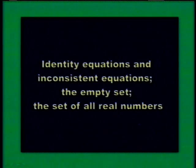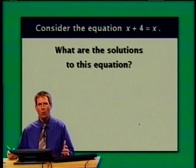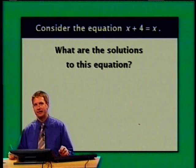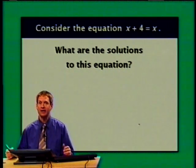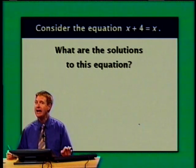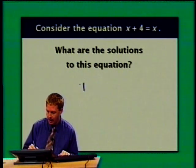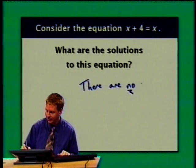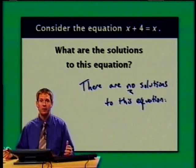Now I'm going to talk about some special types of equations — identity equations and inconsistent equations — and introduce the empty set and the set of all real numbers. Let's consider the equation x plus 4 equals x. In words: what number x could we add 4 to and end up with the same number we started with? There is no such number, so there are no solutions to this equation. Regardless of what number we substitute for x, this equation would always be false.